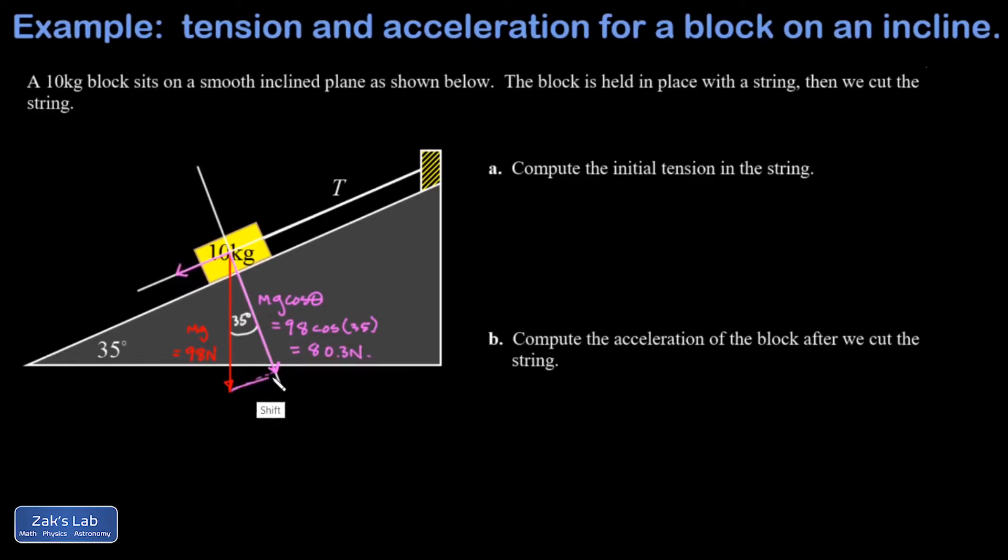Now the opposite side on this triangle, that's given by the sine function, and then we're going to move that to where it's attached to the center of our object. It's given by mg sine theta, that's 98 sine 35, and that comes out to approximately 56.2 newtons.